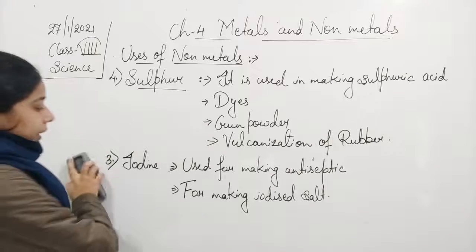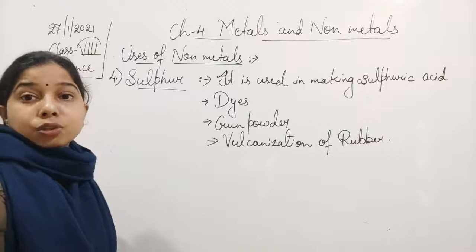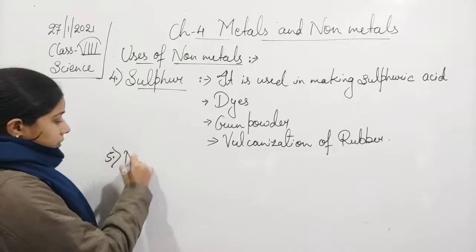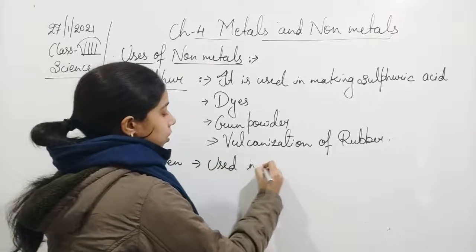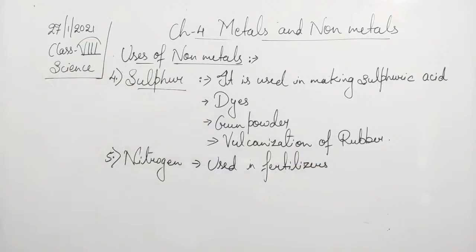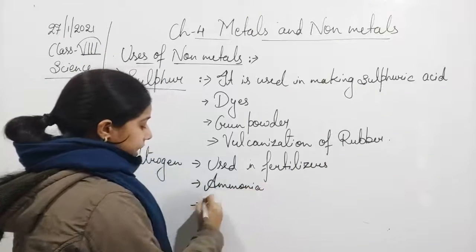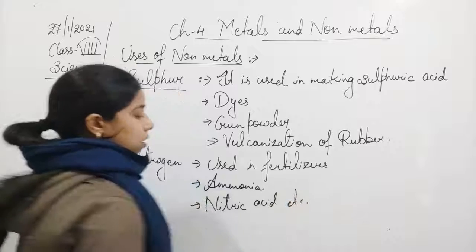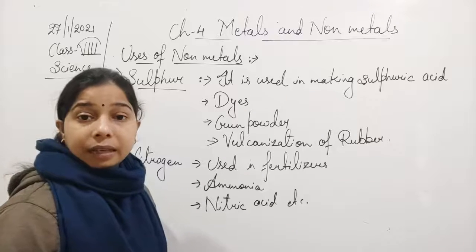Next is nitrogen. Nitrogen, along with phosphorus and potassium, forms NPK, which is used in making fertilizers. Nitrogen is also used in making ammonia and nitric acid, which is a very strong acid.